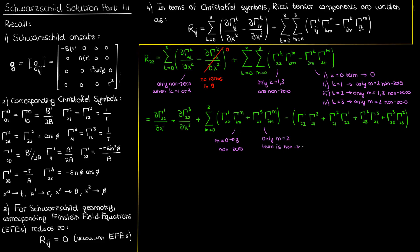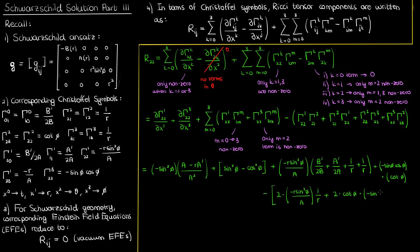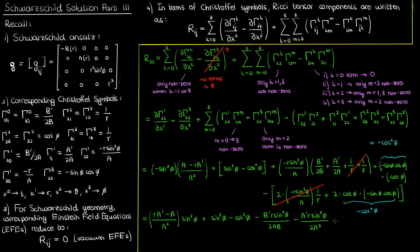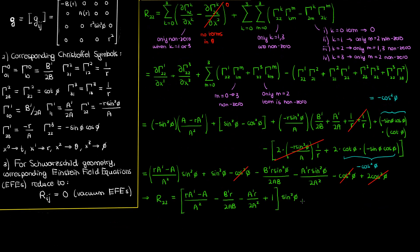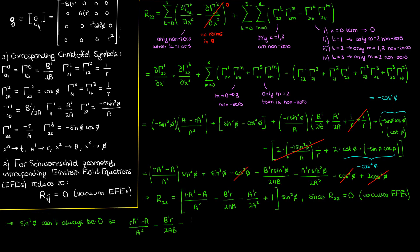After applying these simplifications we're still left with a summation in the middle. The first term in the summation is non-zero for m going from 0 to 3, so we fully expand it. The second term is only non-zero when m equals 2. We plug in our Christoffel symbols: the first partial derivative is found using the quotient rule, and the second partial derivative in phi — using the product rule on negative sine-phi cosine-phi. We then cancel like terms and simplify to get our equation for R₂₂. This has to equal zero, and since the sine²(phi) factor can't always be zero, the term in brackets must be zero. Multiplying through by 2a²b gives equation two.